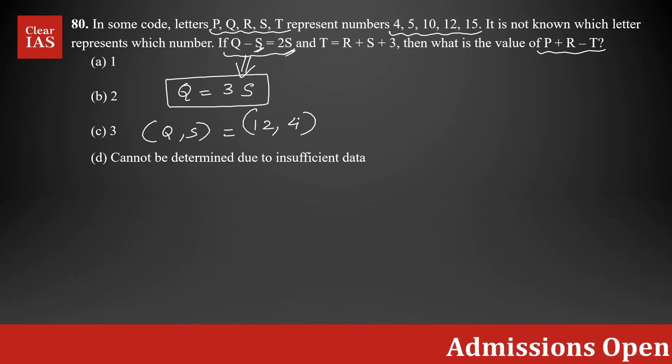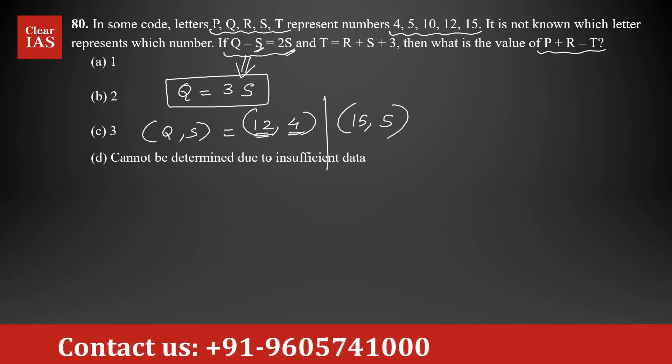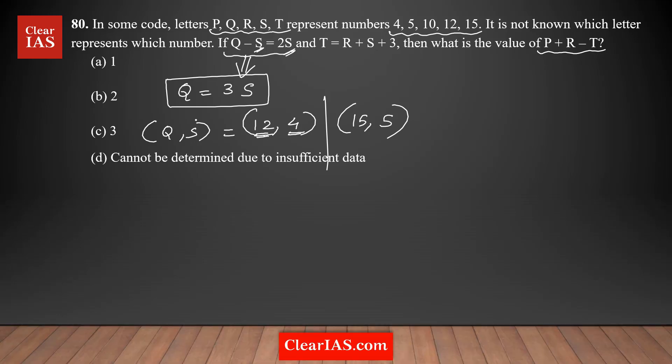So here, 12 could be the value of Q and the value of S is 4. That is one possibility. Is there any other possible pair we could find in the list? Yes, one more possible pair is 15 and 5. These are the two possible set of values for QS combination as per the first condition.